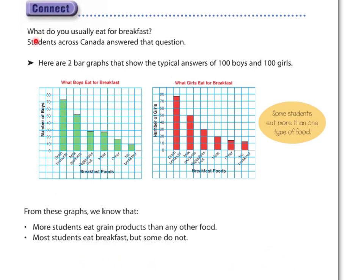Alright, what do you usually eat for breakfast? Students across Canada answered this question. And here we see this information in two bar graphs that show the typical answer of 100 boys and 100 girls. So what boys would eat for breakfast is on the green graph. What girls would eat for breakfast is the red graph.